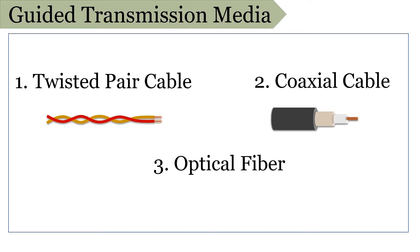The third subcategory is optical fiber. This fiber is made up of glass or plastic, and the signal is transmitted in the form of light. The optical fiber is noise resistant, has less signal attenuation, and has a higher bandwidth. Comparatively, it is expensive and requires installation and maintenance charges. And since it is made up of glass, it is also fragile.